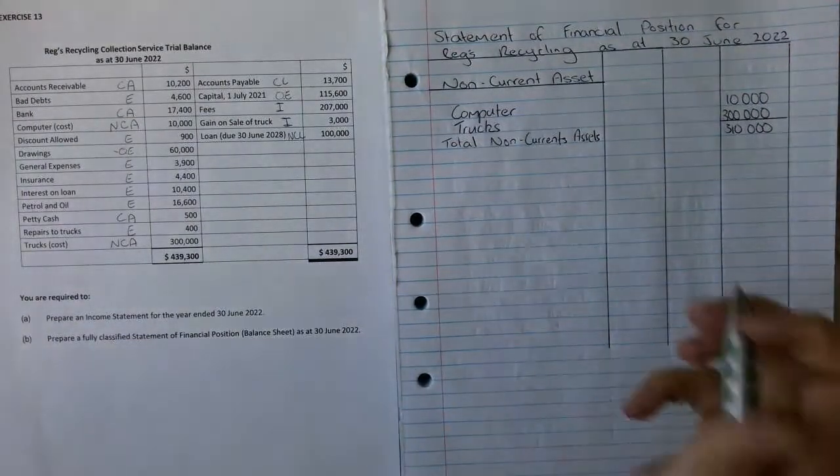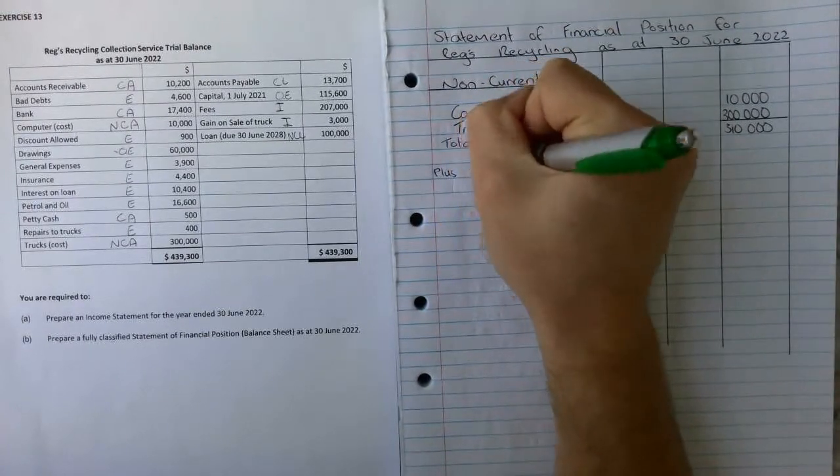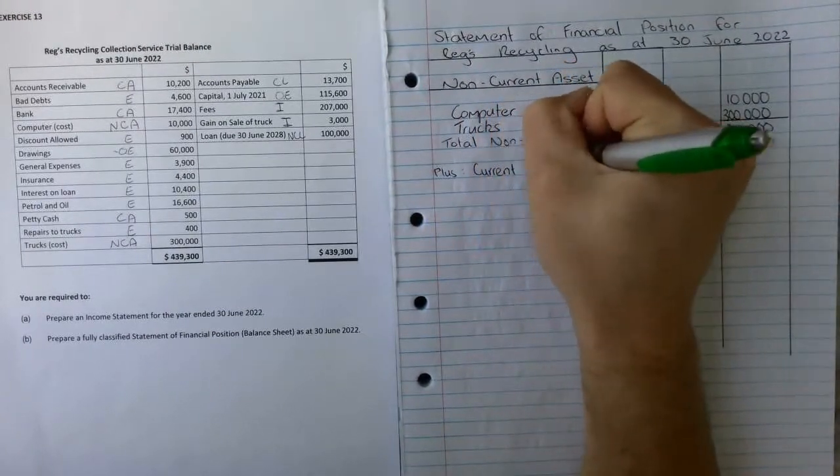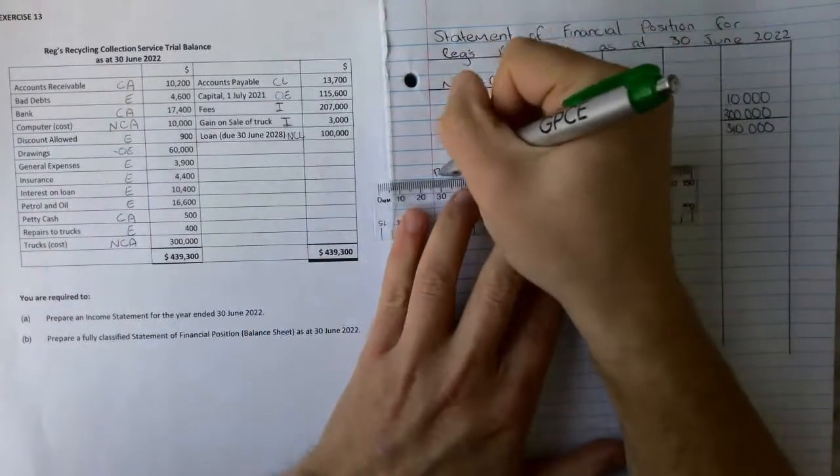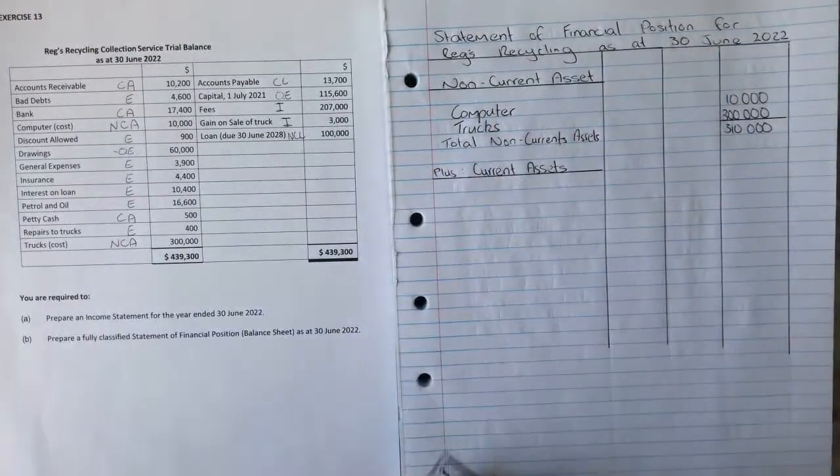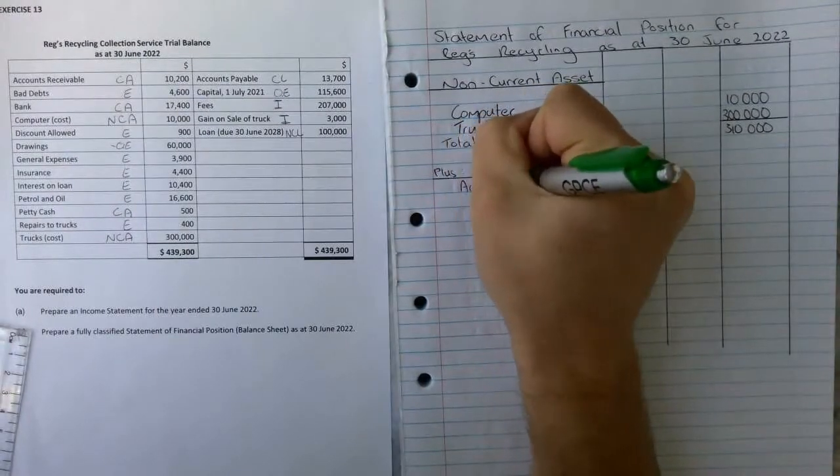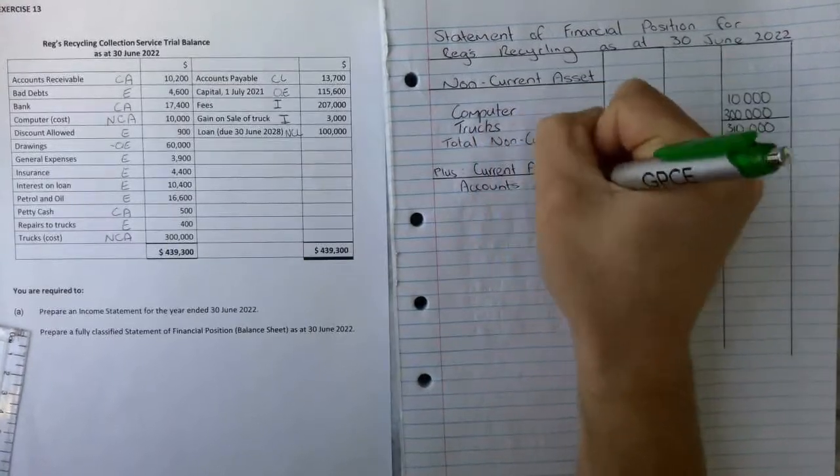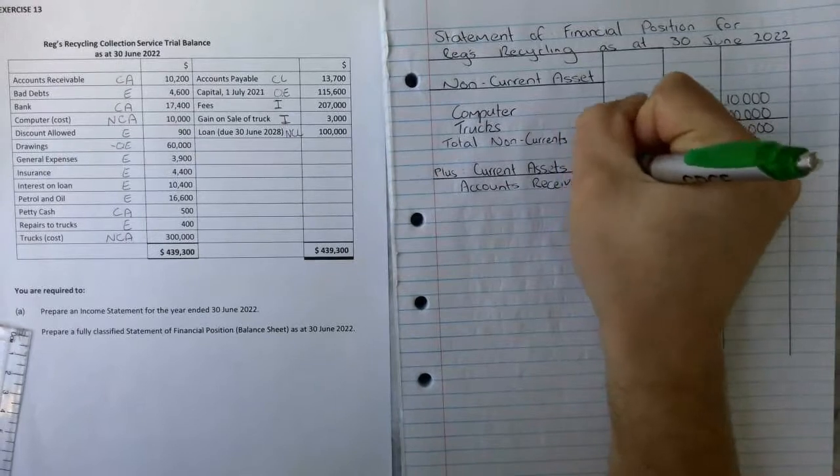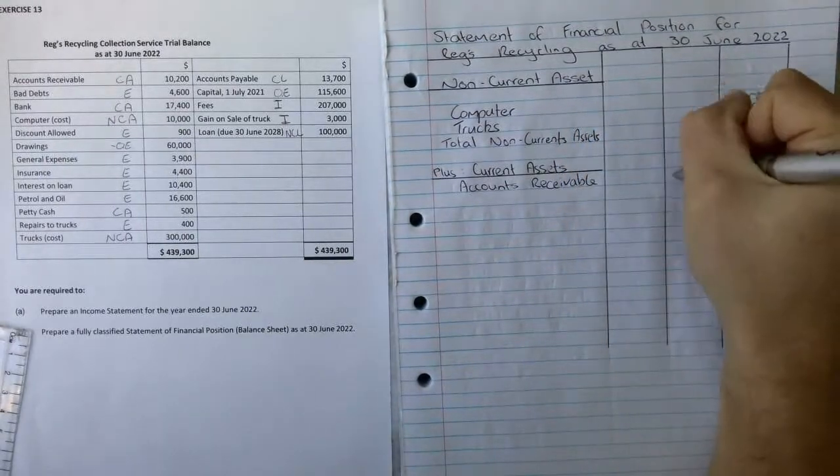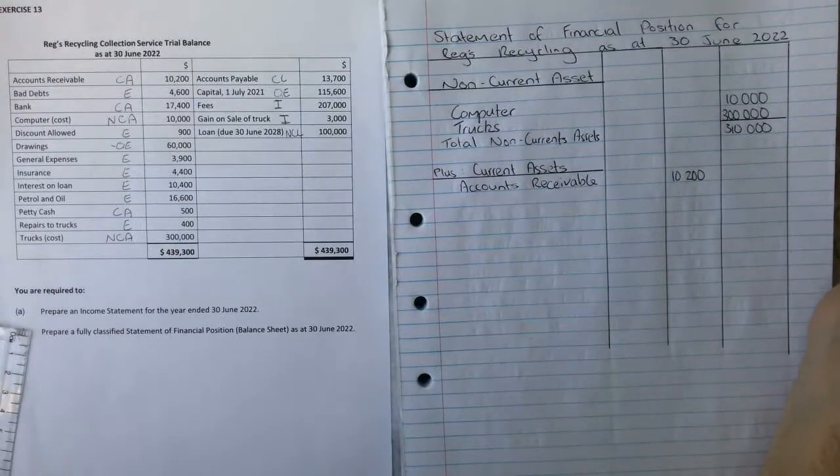Then what we're going to start with is we can write plus current assets. We can underline that because there's a few of them. We're going to, again, start with accounts receivable. We still try and do this in alphabetical order. Our accounts receivable is $10,200.